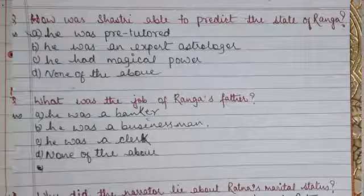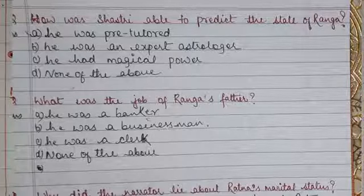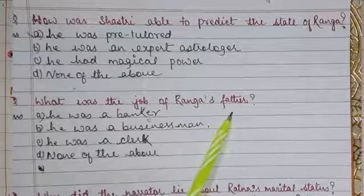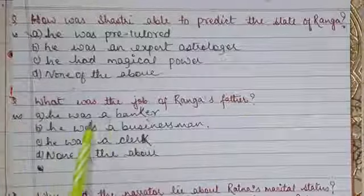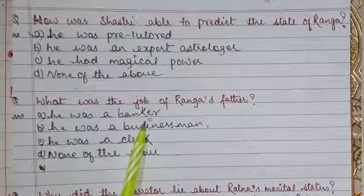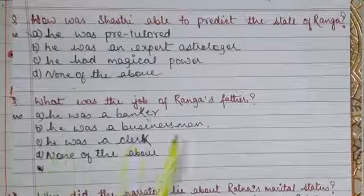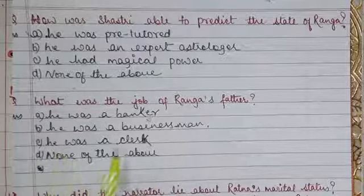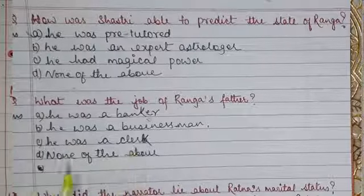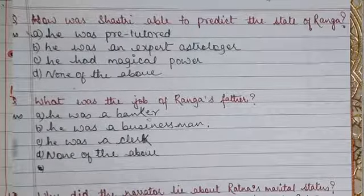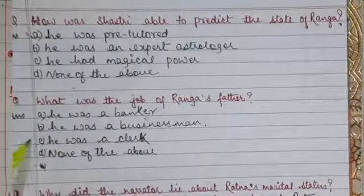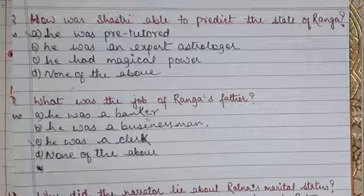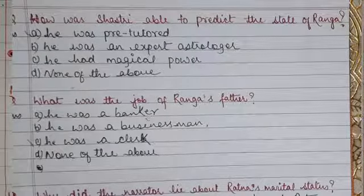What was the job of Ranga's father? Option A: Banker, Option B: Businessman, Option C: Clerk, Option D: None of the above. Option C is correct — he was a clerk. Ranga was a clerk's son.